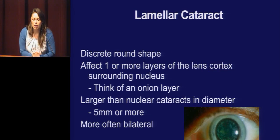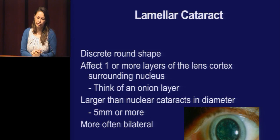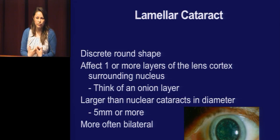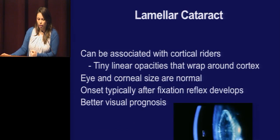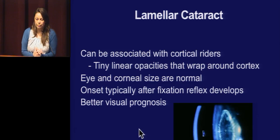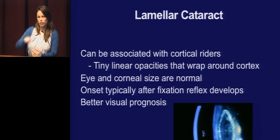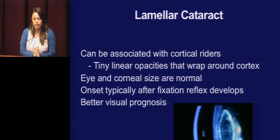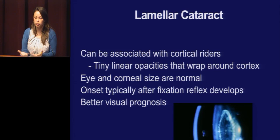Lamellar cataracts affect the layers of the cortex like an onion. A lamellar cataract is an opacification of one or more of those layers. They're a little bit larger, typically about five millimeters or bigger, and more often bilateral. On slit lamp you can see the opacified area and then the clear center. A lamellar cataract can have cortical riders — little tiny linear opacities that wrap around the cortex. The eye is normal in size, and the onset is a bit later, so these kids can actually have pretty good vision and visual prognosis.